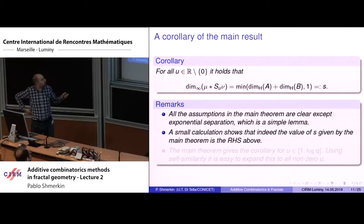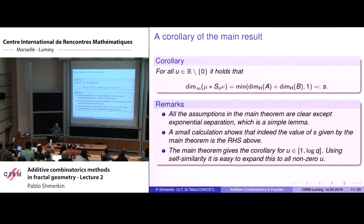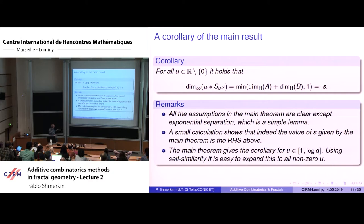In the main theorem, instead of u, we have e^x where x is in the group, and the group is the interval [0, log q]. Apparently we don't have the result for every non-zero real, but using self-similarity it is quite easy — by scaling the Cantor sets by 1/p or 1/q the picture doesn't change, and once you have it on any non-empty interval, you have it for every real number by a scaling argument. For negative u, flipping the q-Cantor set gives another q-Cantor set, so it holds there too.